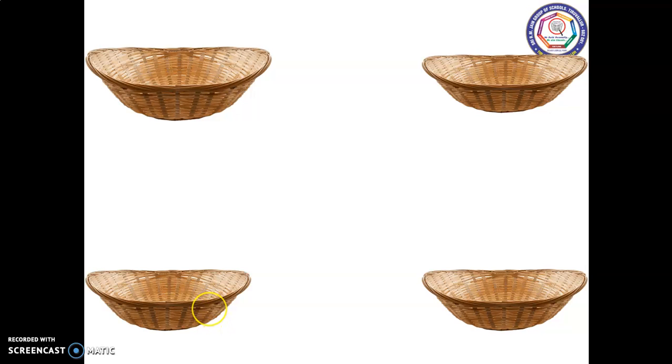Children, here you can see 4 baskets. Let's count how many fruits are there in each basket. In the first basket — one, two — we have two fruits in the first basket.